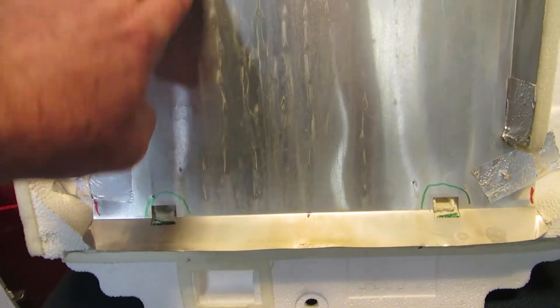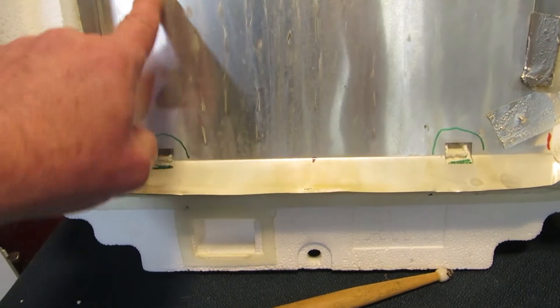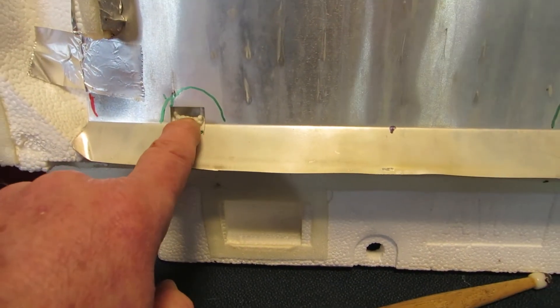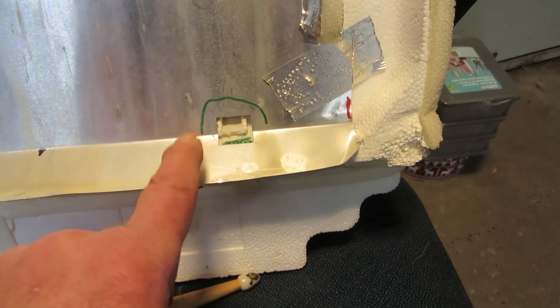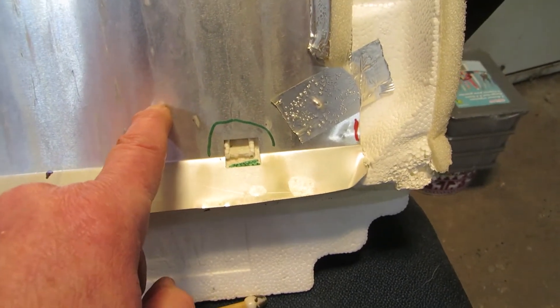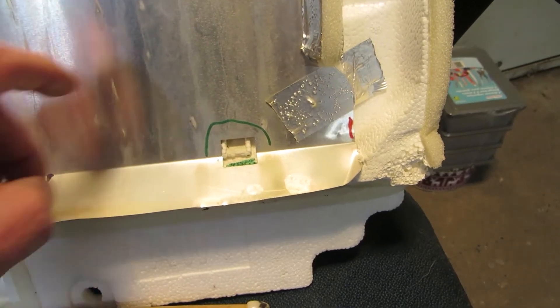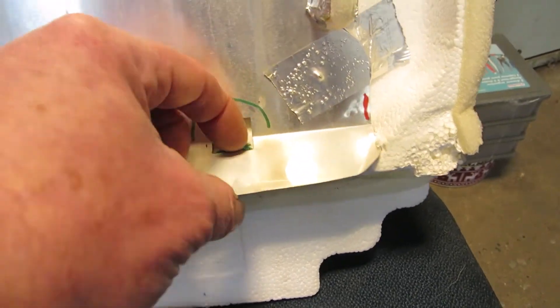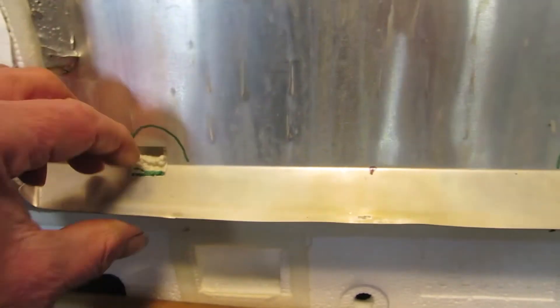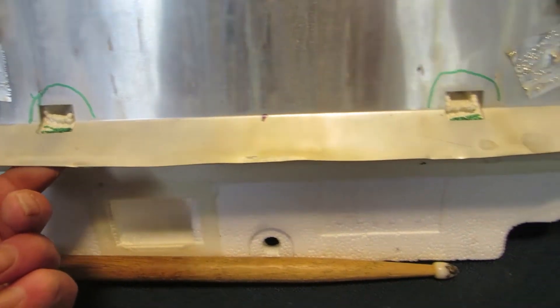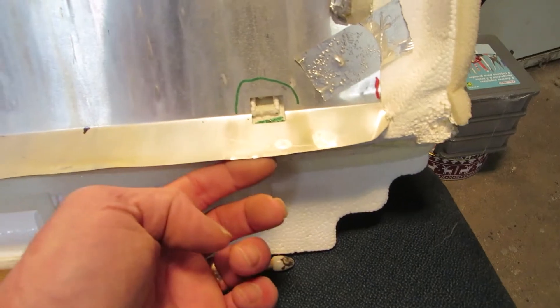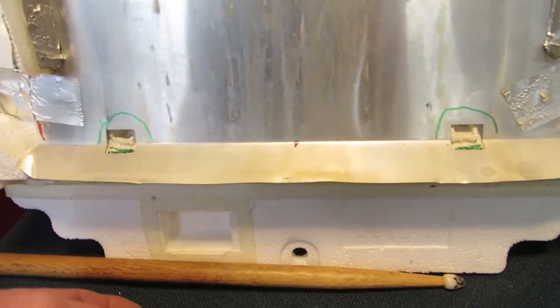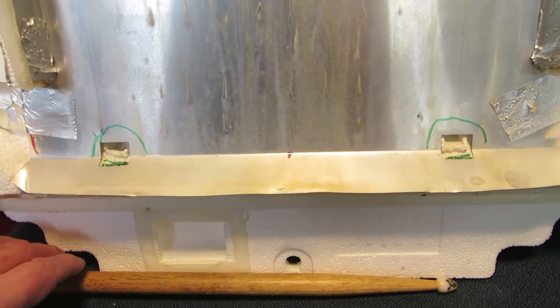Secondly, water will run down here. I have no idea what these are for. I can't see that they locate anything unless it's just to locate this aluminum cover. Water again can get under here and under here. Its only way out is under the splash guard and into your crisper drawer.